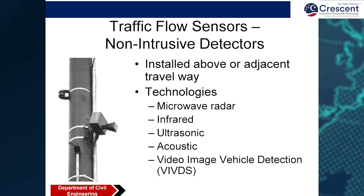Another important traffic flow sensor is the non-intrusive detector. It works with the help of microwave radar, infrared, ultrasonic, or acoustic elements. Rays are projected across the road, and when vehicles pass through, the rays are cut and the number of vehicles is counted. Video image vehicle detection can also be done with these types of sensors by fixing a video camera with them.